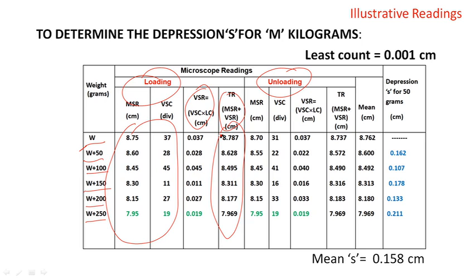For the weight W plus 250 grams, the reading should be copied into the unloading part. Then remove one weight from W plus 250 grams so the weight becomes W plus 200 grams, for which you follow the similar procedure to find the MSR and VSE readings. Continue removing 50 grams each time to find readings for W plus 150, W plus 100, W plus 50, and finally W.